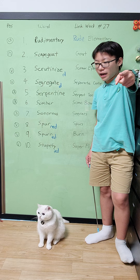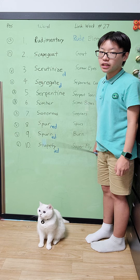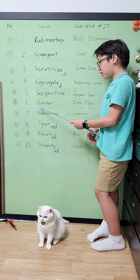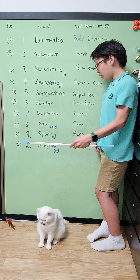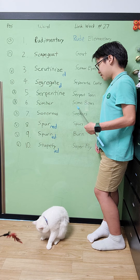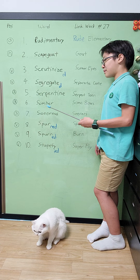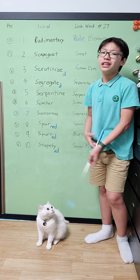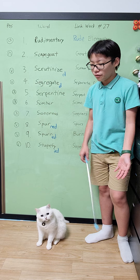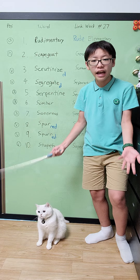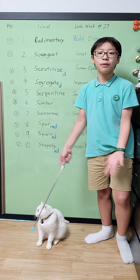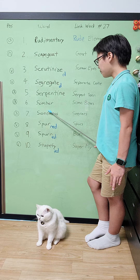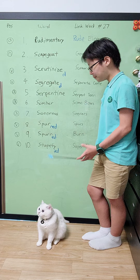Number 6, somber. It doesn't mean 'some bears' — somber is an adjective that basically means feeling lonely or sad. You remember somber with 'some bears': some bears are actually somber when they go into hibernation.